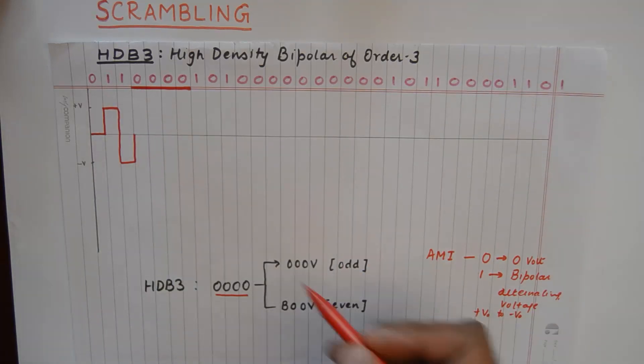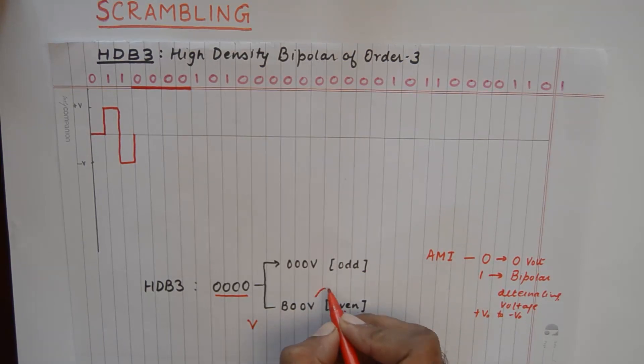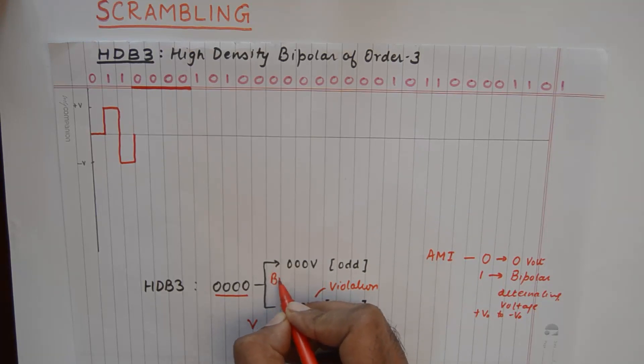So two is even. So for even we need to convert this 0000 into B00V. So now what is B00V? V stands for violation and B is a normal bipolar transition.